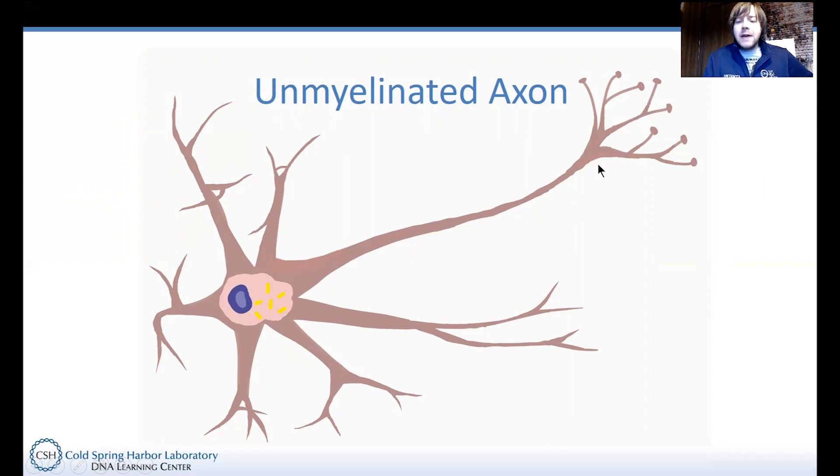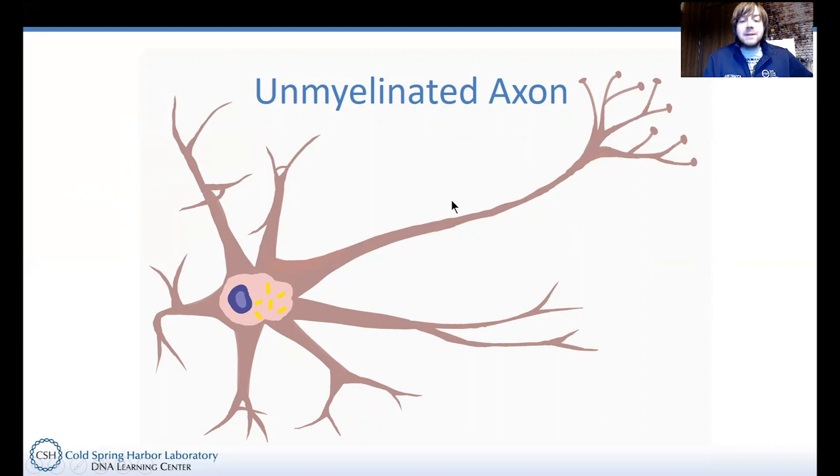And so if you notice, this axon is pretty bare. So we call this unmyelinated, meaning that it lacks something called myelin. And myelin are little fatty deposits that are produced by what are called Schwann cells, if you're talking about neurons in the peripheral nervous system, which we likely are, just because this neuron is very likely a motor neuron, meaning that it connects from the central nervous system to a motor unit, such as a muscle or gland. And so in the peripheral nervous system, these Schwann cells wrap themselves around the axons of neurons, and they wind up secreting this myelin, this fatty myelin.